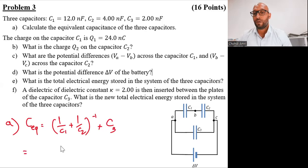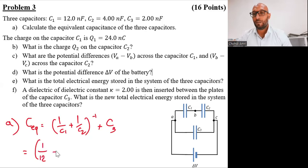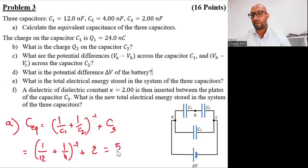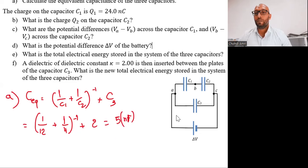We are done in just one step. We substitute the numbers and get (1/12 nanofarad + 1/4 nanofarad)^(-1) plus 2 nanofarad. The result is 5 nanofarad, and this is the equivalent capacitance of this circuit.